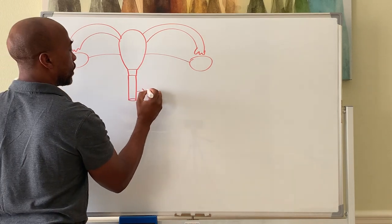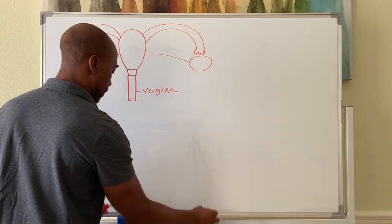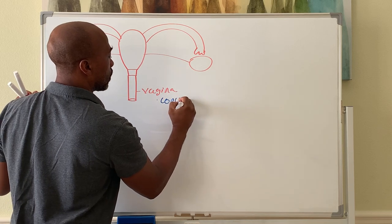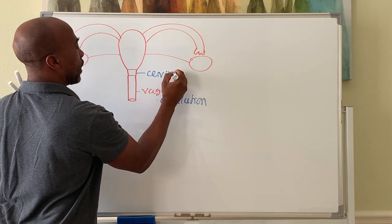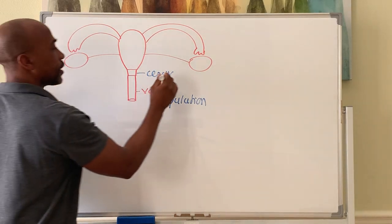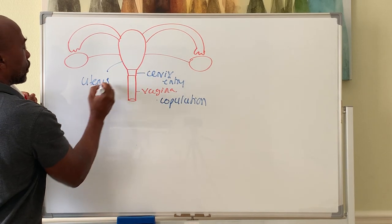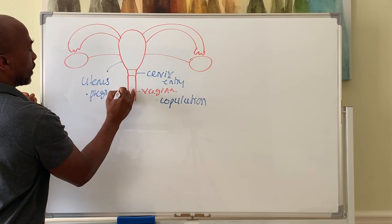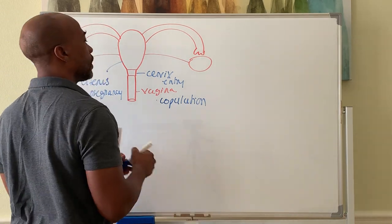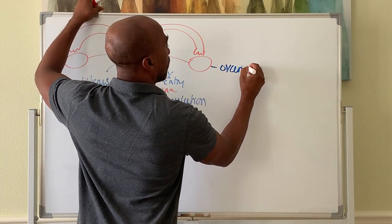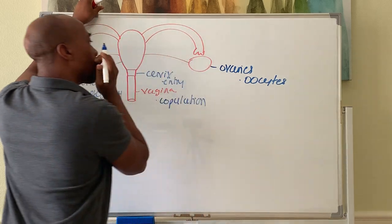The vagina is the organ of copulation and the birth canal. Your cervix is the entry into the uterus. The uterus is used for pregnancy and houses the developing embryo and fetus. And you have your ovaries.